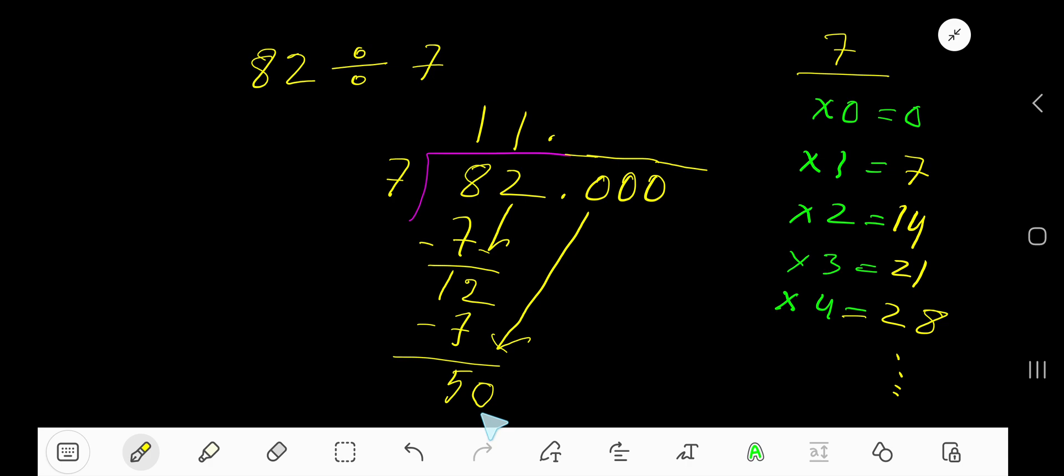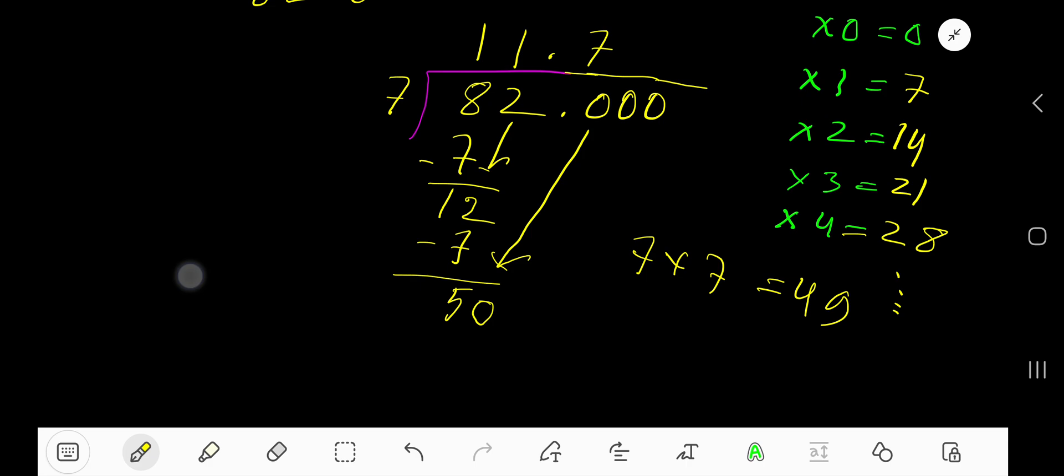Now 7 goes into 50 how many times? 7 times 7 is 49. If you subtract, then we are getting 1.